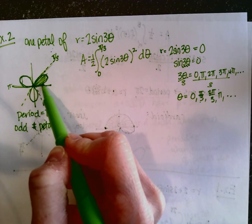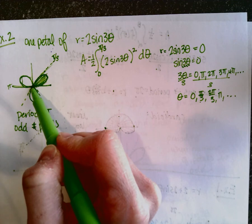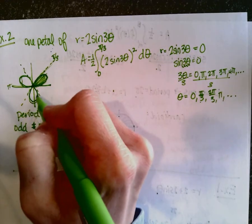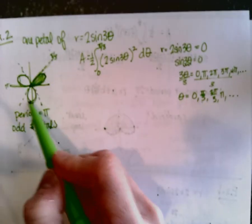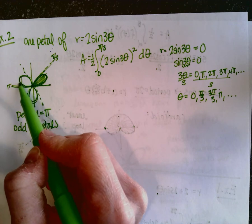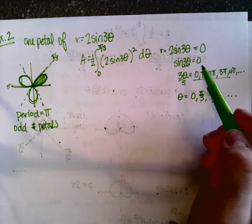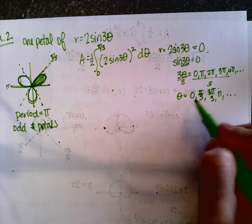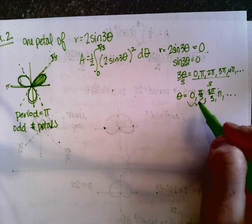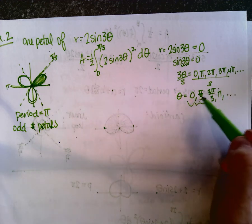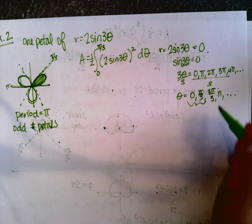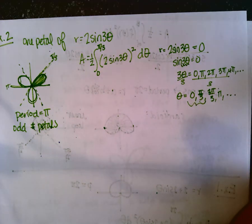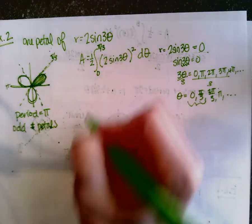That makes sense from the graph: we have a zero at theta equals zero, then when we reach pi over three we're back to zero, then at two pi over three the r value is negative so we're back to zero, then at pi we're back to zero. So another way to find where the petals start and stop is to set the function equal to zero and pick any two consecutive zeros to integrate between for one petal.